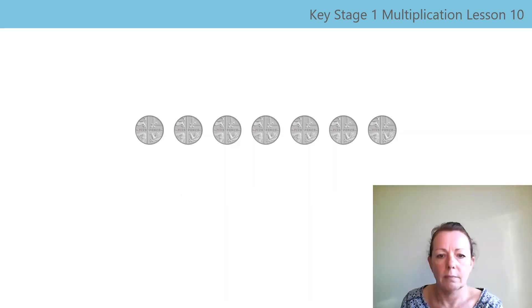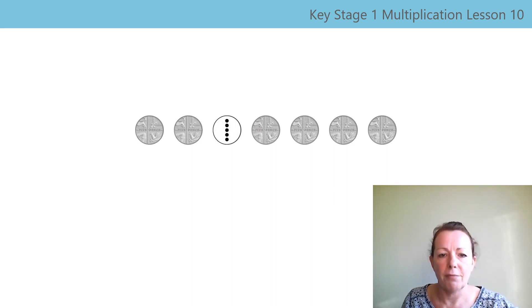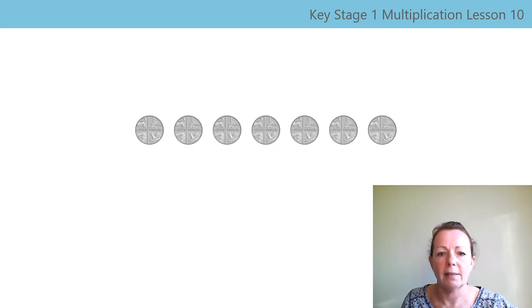So, today, I have some five-pence coins. How can we work out the value of a set of five-pence coins? We can count in fives. Remember, when I see a five-pence coin, I think five one-pennies. Let's work out the value of this set of coins. We'll start by counting in groups of five: one five-penny, two five-pennies, three five-pennies, four five-pennies, five five-pennies, six five-pennies, seven five-pennies. We've got seven five-pennies.